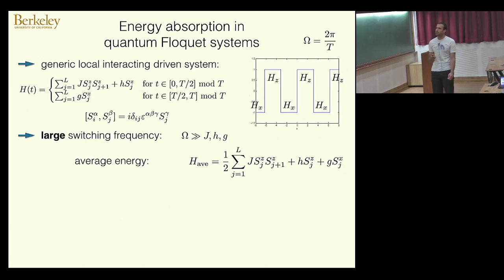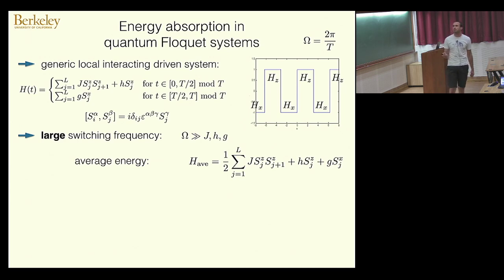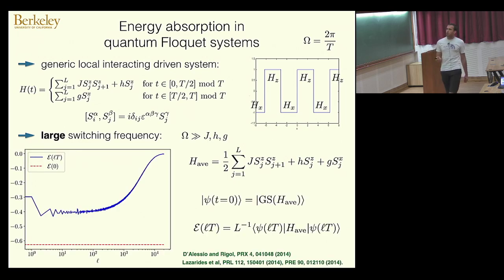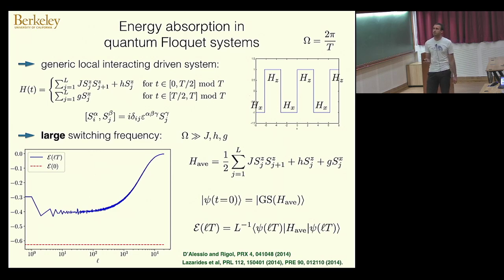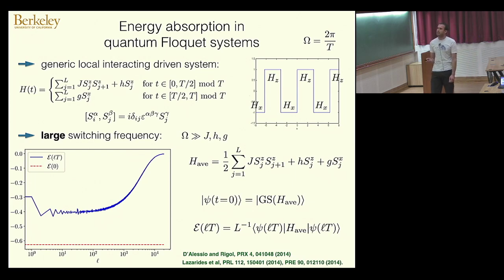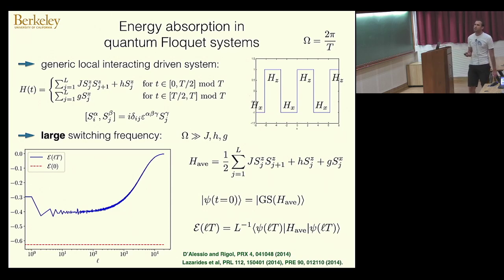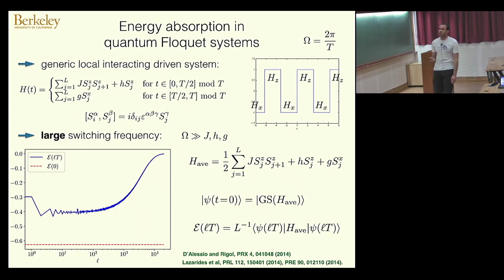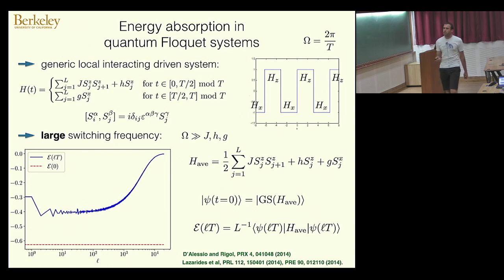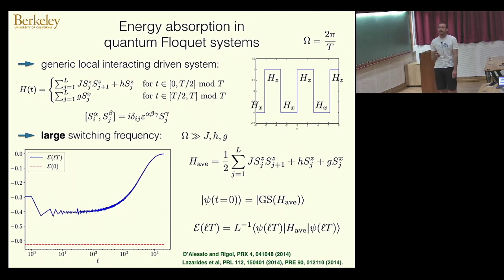To measure the energy, I need to specify a Hamiltonian. At high frequency, it makes sense to use the time-averaged Hamiltonian, which is just one-half the sum of the two terms. I pick the ground state of this Hamiltonian as the initial state and evolve it with the exact dynamics, then measure the energy density as a function of time. On a log scale of driving cycles, the system doesn't want to absorb energy for a fairly long time, then starts heating up until it reaches an infinite temperature state.